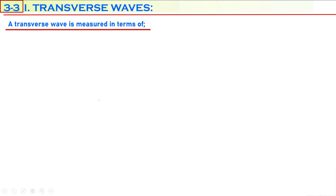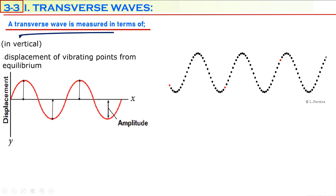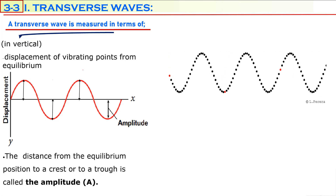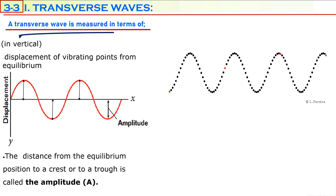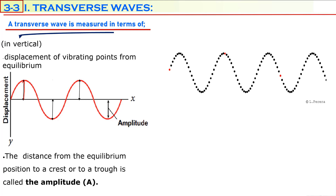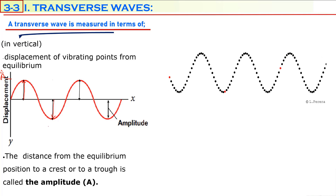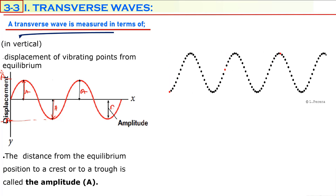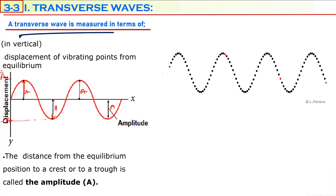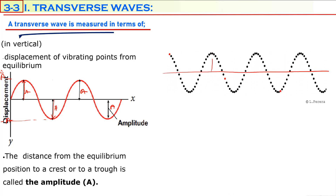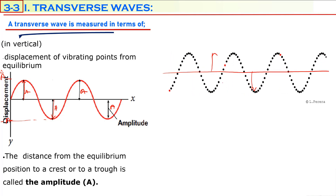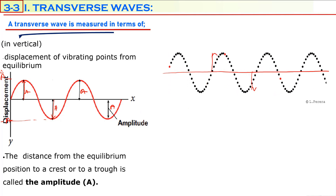Transverse waves are measured in terms of vertical and horizontal distance. In the vertical direction, the maximum displacement from the equilibrium position is known as the amplitude. It is the distance from the equilibrium position to a crest — the maximum displacement in one direction is positive A, and the maximum displacement in the opposite direction is negative A. Both are called the amplitude of the wave.